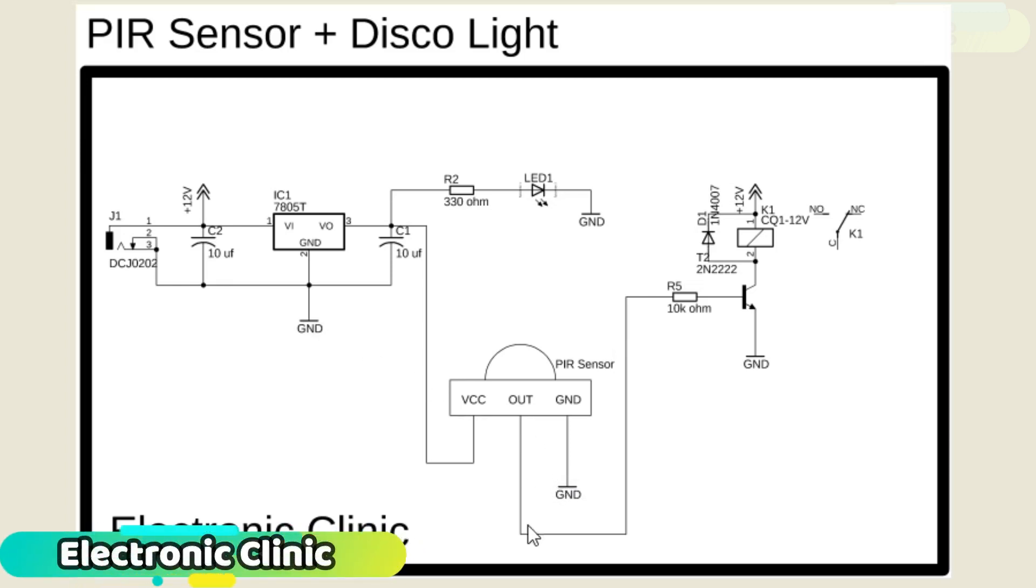The output pin of the PIR sensor is connected with the base of the 2N2222 NPN transistor through a 10k resistor. The emitter of the NPN transistor is connected with the ground while the collector side is connected with one side of the relay coil.